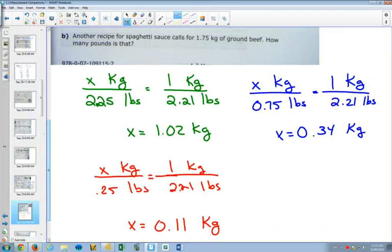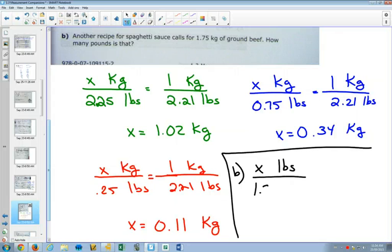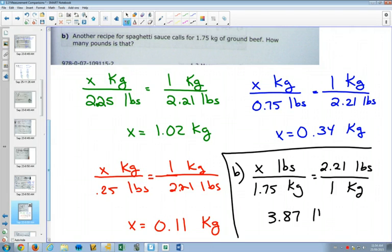Another one says it needs 1.75 kilograms of ground beef. I'll do this one in black for part B. We want to find out how many pounds. And we know we've got 1.75 kilograms. Go to our formula sheet, and we know that 2.21 pounds is 1 kilogram. Multiply both sides by 1.75. And we get 3.8675, which, if I round it, is 3.87 pounds.